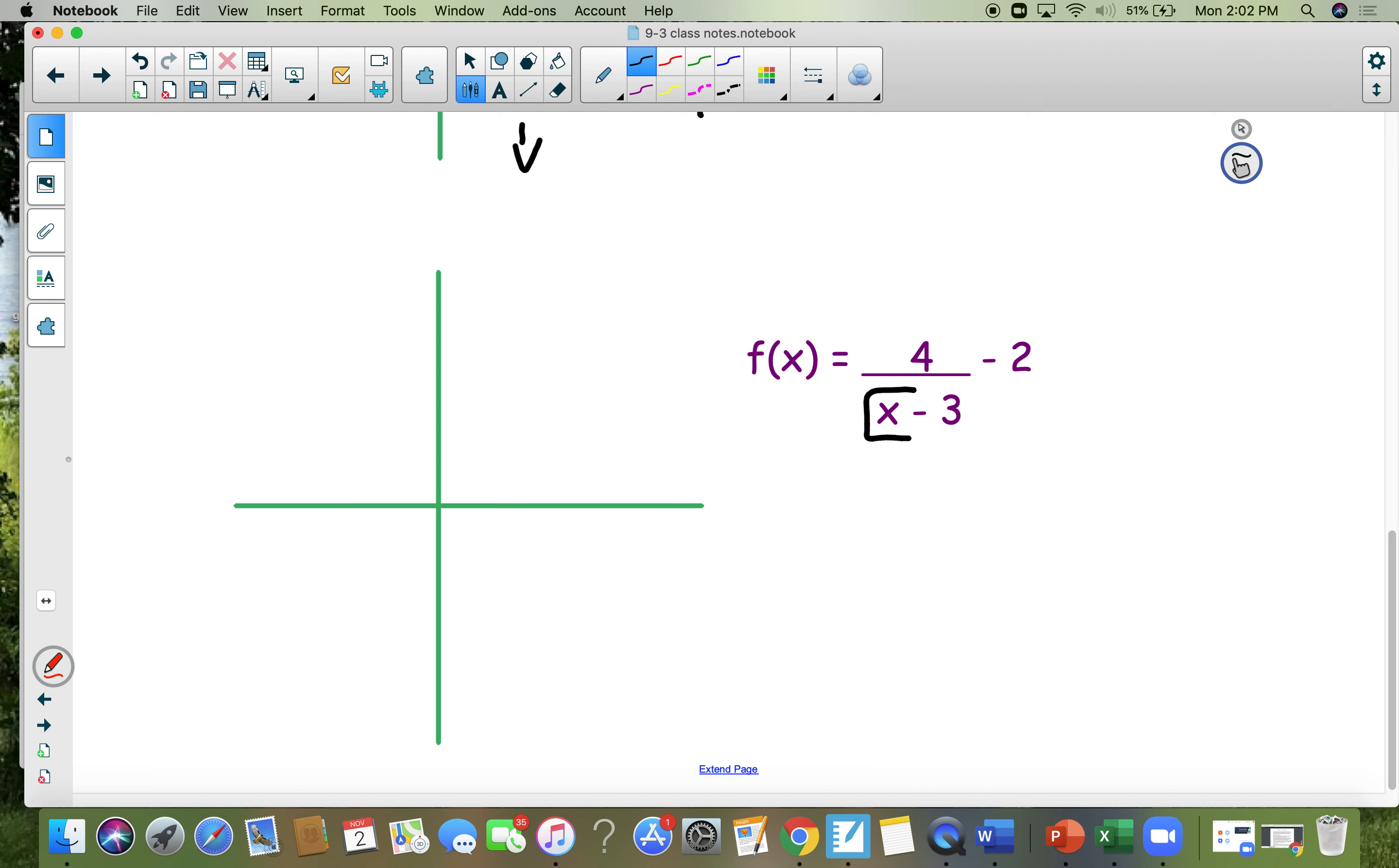This stands for the vertical asymptote, the VA. And this stands for the horizontal asymptote. Okay, so I'm going to set that equal to 0 and solve for x to find the vertical. The vertical asymptote is at x equals 3. So go 1, 2, 3 and make a vertical dotted line. It's called the vertical asymptote.